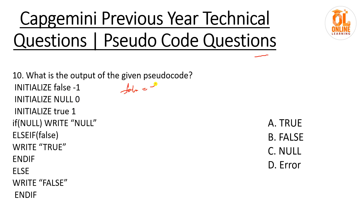Last question: variables are defined as false = -1, null = 0, true = 1. In any condition, only 0 or false is treated as a false condition; any non-zero value (including -1) is treated as true. So if(null) means if(0) which is false — that block doesn't execute. Else-if(false) means else-if(-1): -1 is non-zero so it's treated as true — that branch executes. That's the correct answer. All the best, thank you!